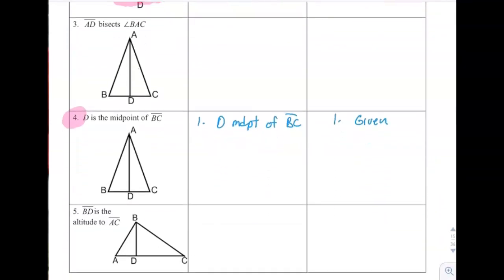Number 4, D is the midpoint of BC. So if D is the midpoint of BC, then we know that those two are the same. So BD is congruent to CD because a midpoint implies two congruent segments.